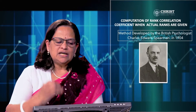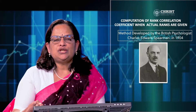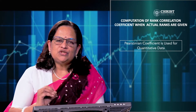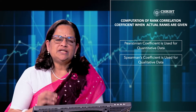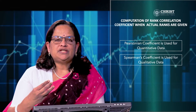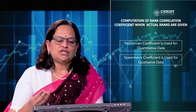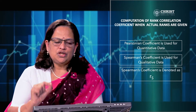This method was developed by the British psychologist Charles Edward Spearman in 1904, so we always refer to it as Spearman's rank correlation coefficient. Pearsonian coefficient is used for quantitative data — when you get numbers, you calculate Pearsonian coefficient. But Spearman's correlation is used when you get qualitative data: honesty, leadership ability, judgment in a beauty contest. It is denoted by rs — small r and s, where S stands for Spearman's correlation coefficient.